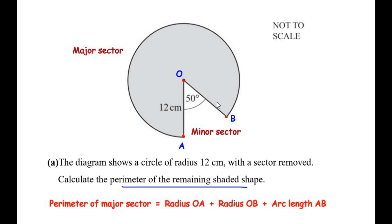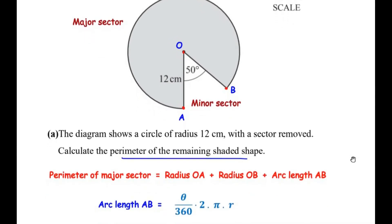We know the radii are 12 centimeters, but the arc length AB is not given, so we need to find it. The formula for arc length is theta over 360 times 2πr, where theta is the central angle and r is the radius. Since the minor sector angle is given as 50 degrees, the major sector angle is 360 minus 50, which equals 310 degrees.